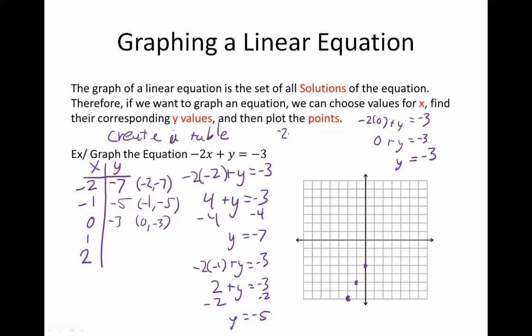All right, now we need to plug in the 1. -2 times positive 1 plus y equals -3. That's -2 plus y equals -3, so I add 2 to both sides and I get y equals -1. So I'm doing the solving a little bit faster now, but that gives me another point at (1, -1).